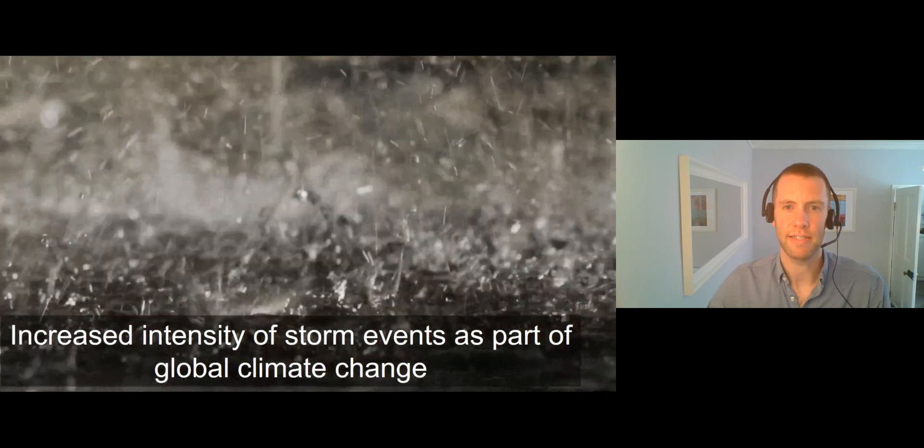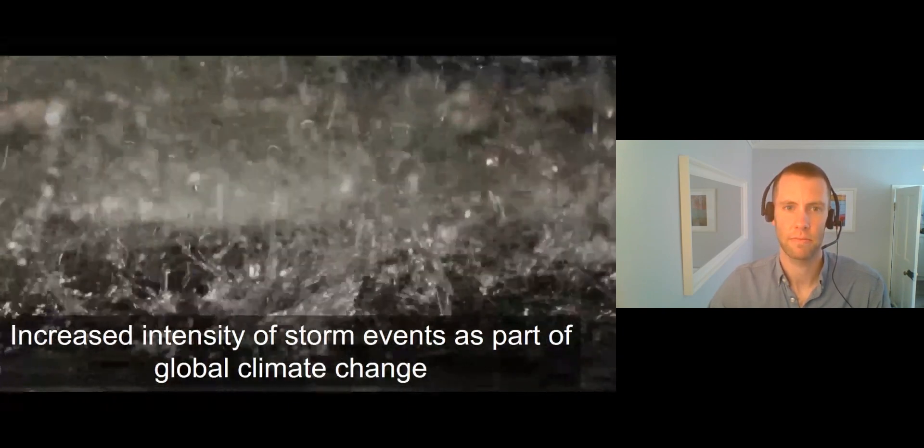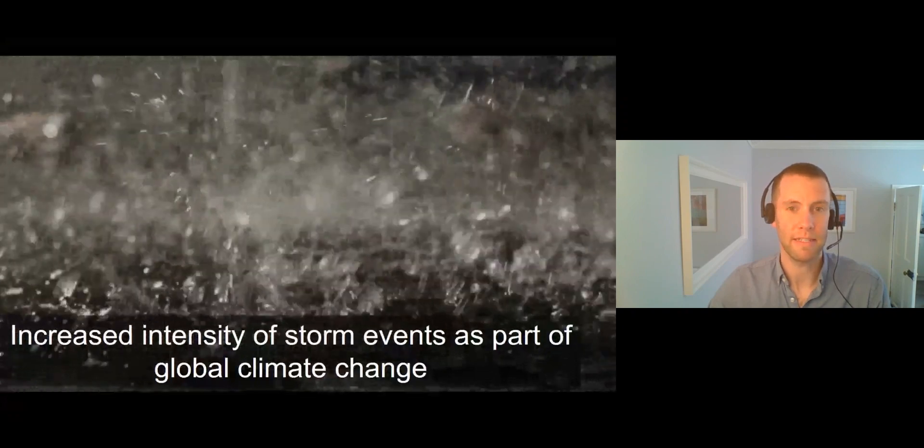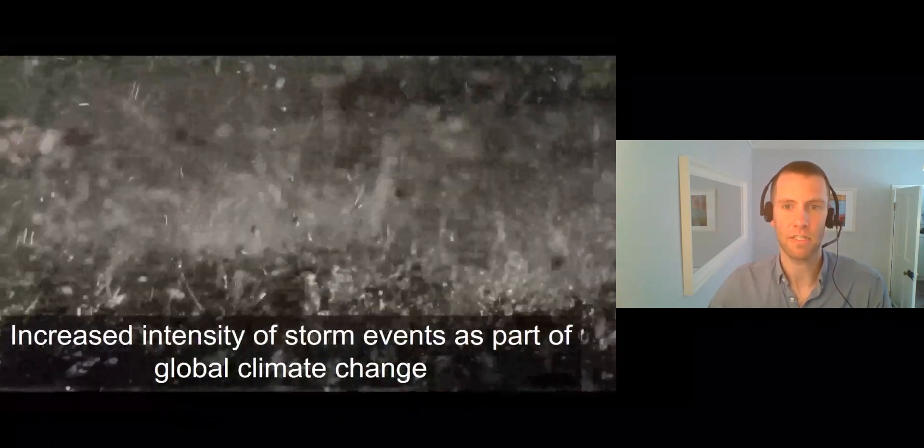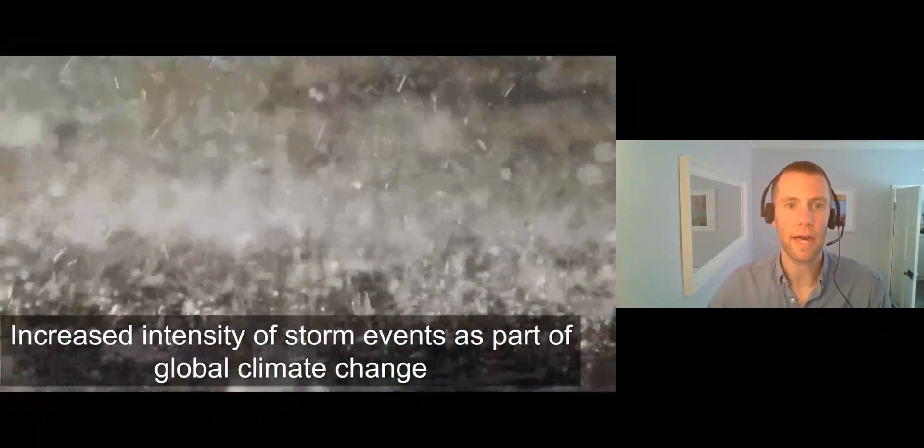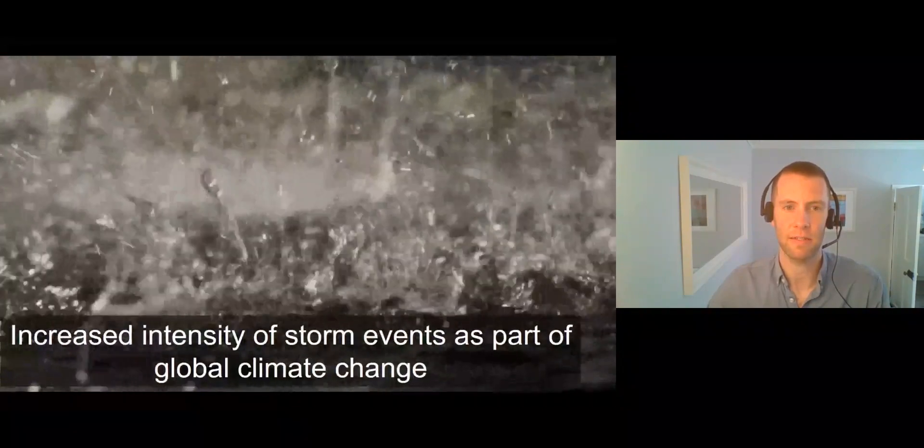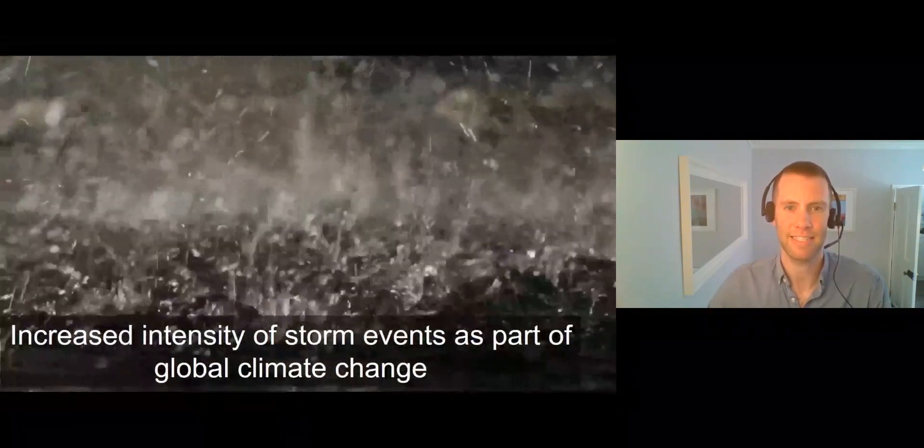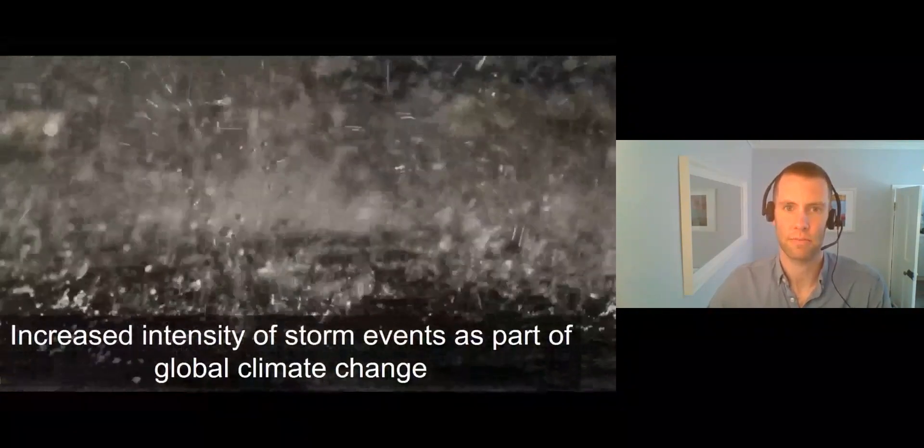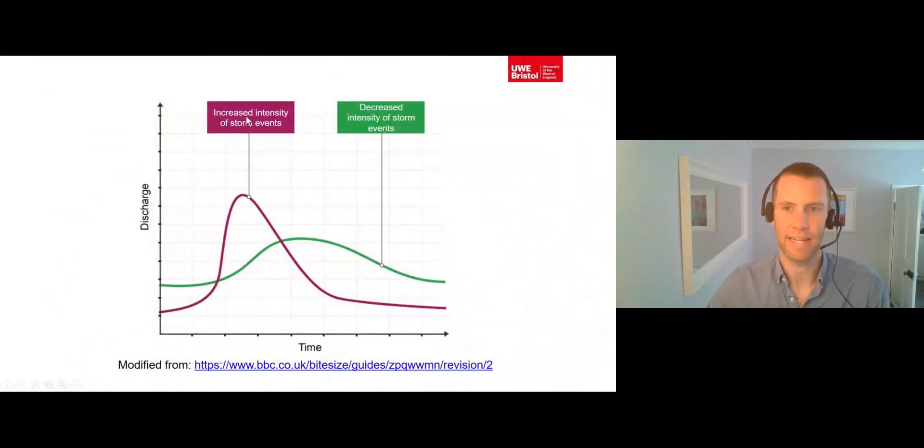Humans are influencing the intensity of storm events as part of global climate change. Global climate is changing as a result of increased carbon emissions from human activities. The UK climate projections predict that the UK will experience significant increases in precipitation intensity in the future. This increase in precipitation intensity is likely to increase the flashiness of our drainage basins.